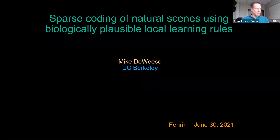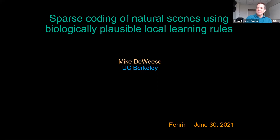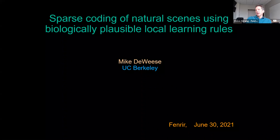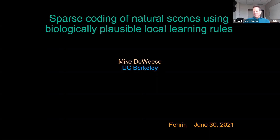We are fortunate to have Mike DeWeese with us here today to deliver the second in the Fenrir Distinguished Data Scientist Speaker Series. Mike is a professor of physics and neuroscience at the University of California, Berkeley. His theoretical interests include non-equilibrium statistical mechanics, information theory, and machine learning. He has also done actual experimental neuroscience work as well as neuroscience theory. Today's talk is a bit machine learning and a bit neuroscience theory. Mike, why don't you take it away?